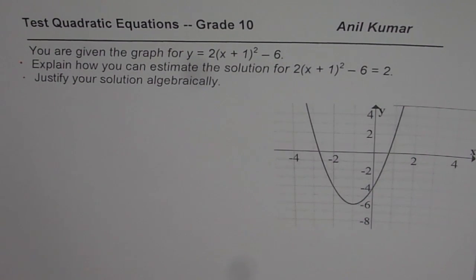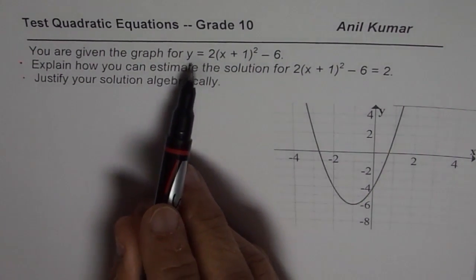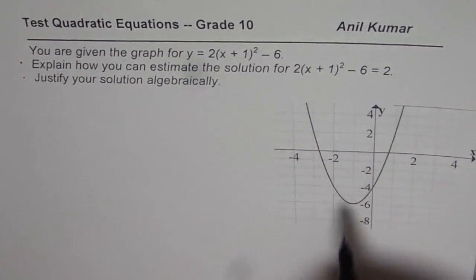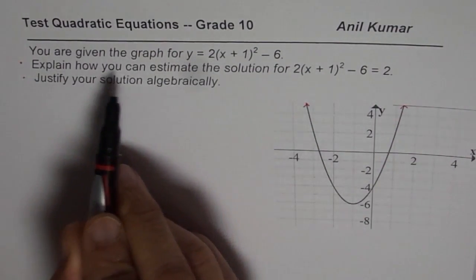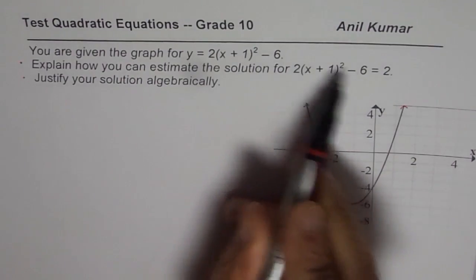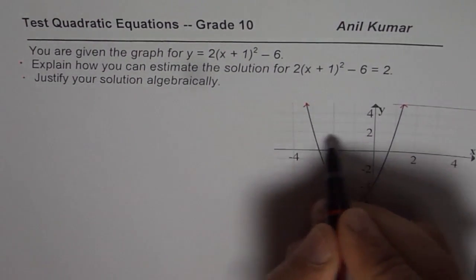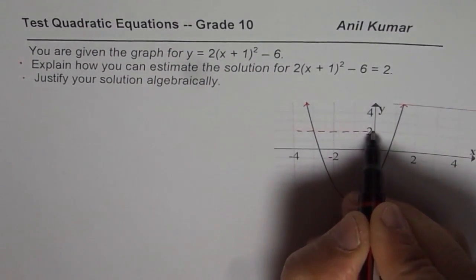Now here is how we can do it. We are given the graph of the function which is 2(x + 1)² - 6, the parabola going upwards. Now when you say explain how you can estimate the solution of this parabola equals to 2, that means draw a horizontal line at 2. So that is the y value.